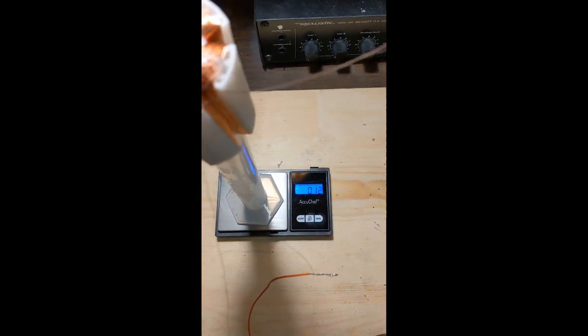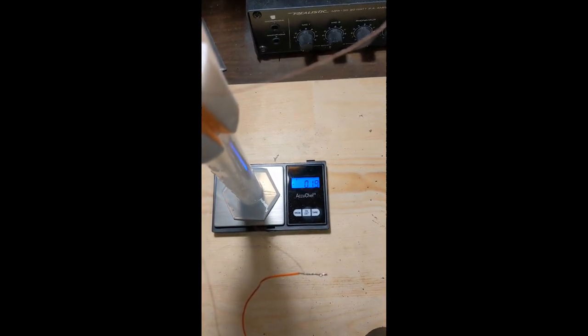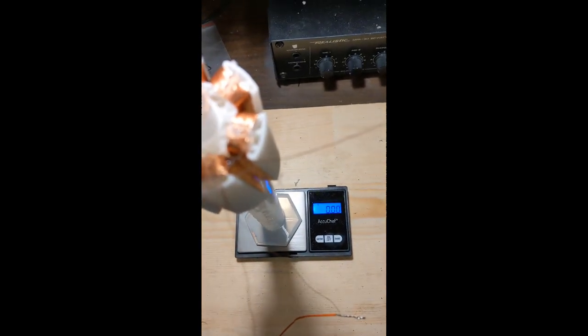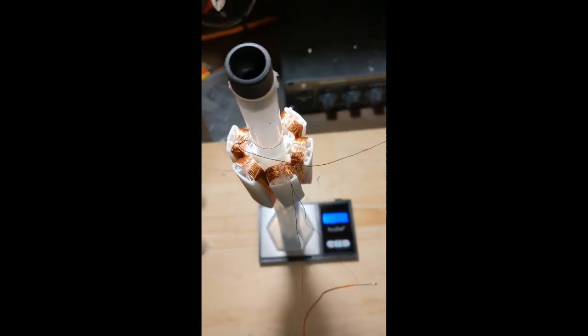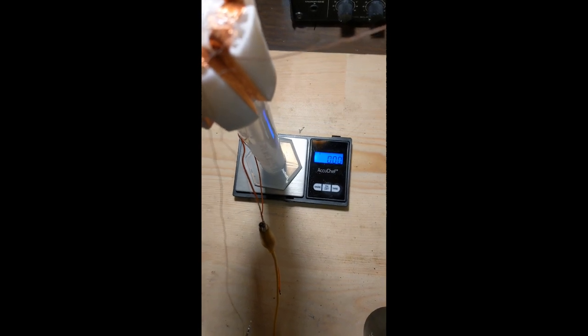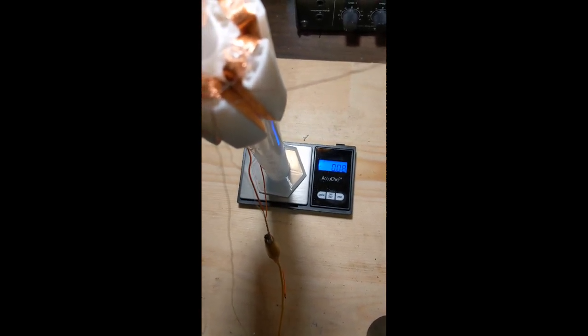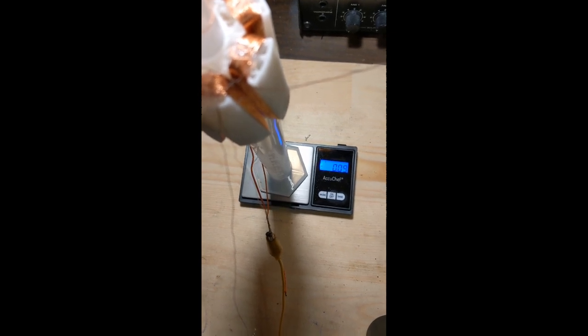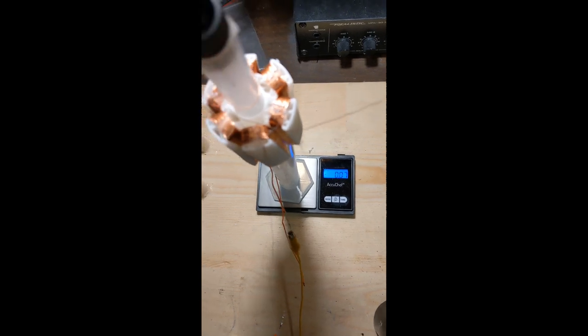These wires here are screwing up the focus. All right, so the scale is saying minus zero point two. Let me just see if I can zero that out. Minus zero point zero five. It looks like it went negative, hard to tell it's so fast.